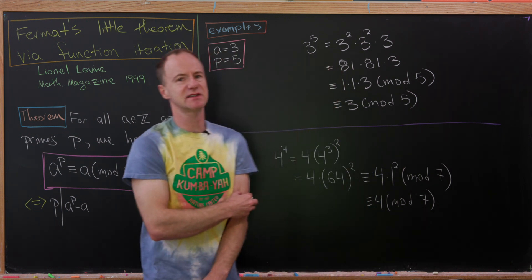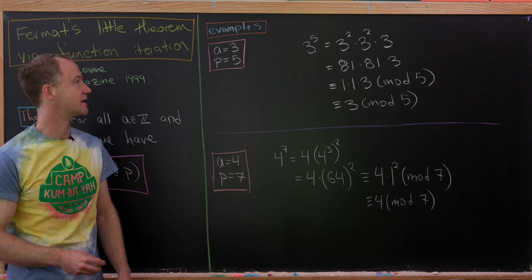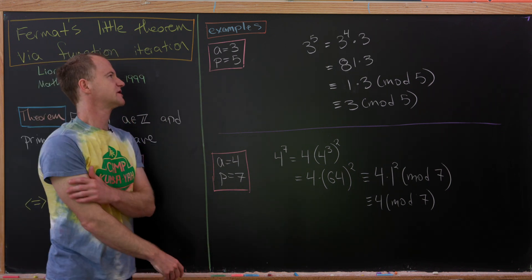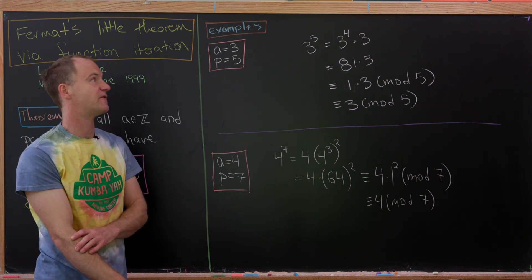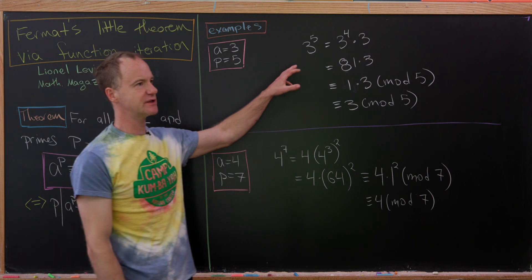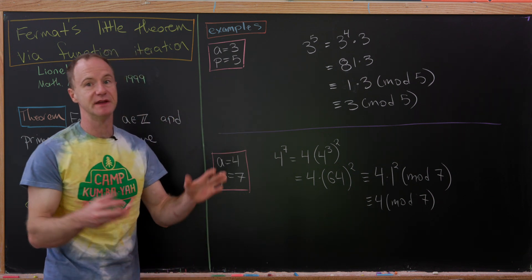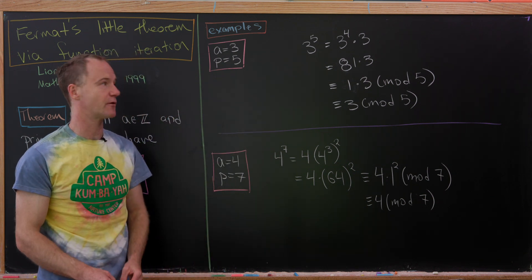Okay, so let's look at some basic, maybe calculational examples here. So for our first example, let's look at the case when a is equal to 3 and p is equal to 5.